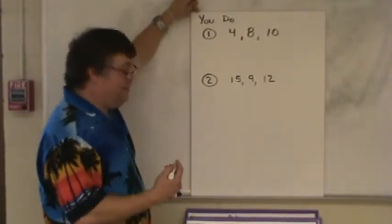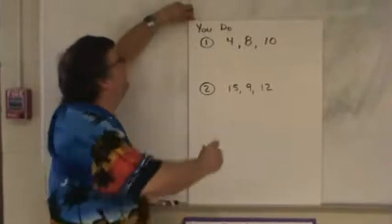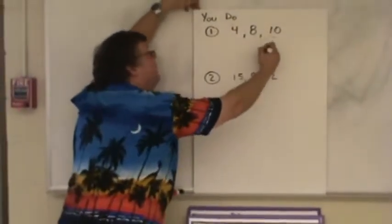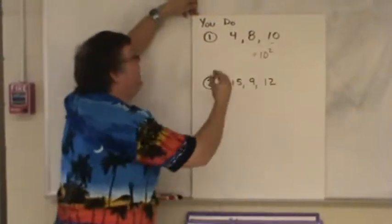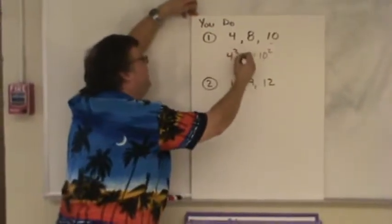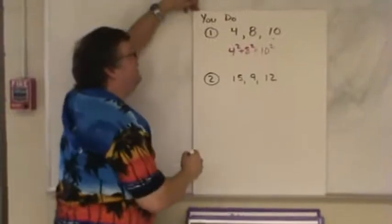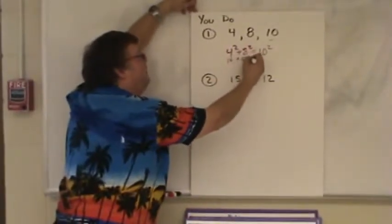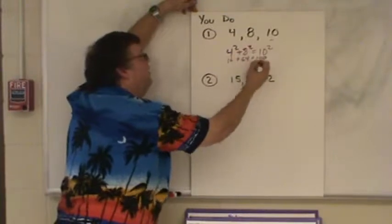Welcome back. Let's see how you did. Alright, which one is the largest number here? The largest number is the 10. So it's going to be on the one side equal sign by itself. The other two, I square on this side and add together. 4 squared is 16. 8 squared is 64. 10 squared is 100.